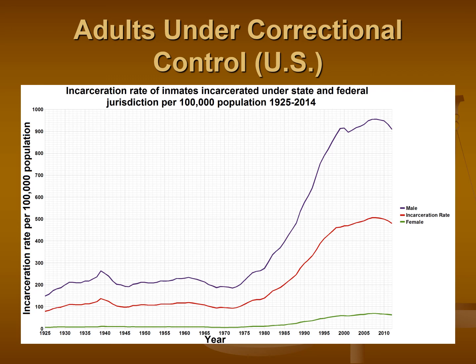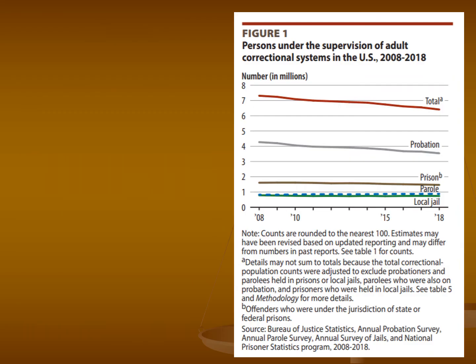We'll talk about the various laws and policies — tough on crime, truth in sentencing, three strikes laws, mandatory minimums — that led to this overwhelming spike in our incarceration rate. The good news is that over the last decade or so, we've actually started to slowly reverse that trend, and from about 2008 until now we've noticed that we're starting to level off and actually see a little bit of a dip.